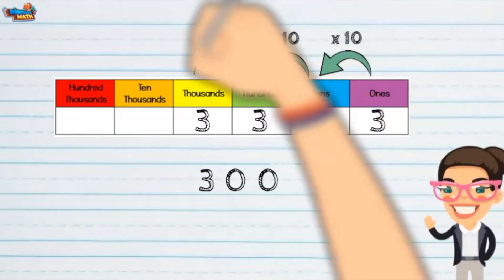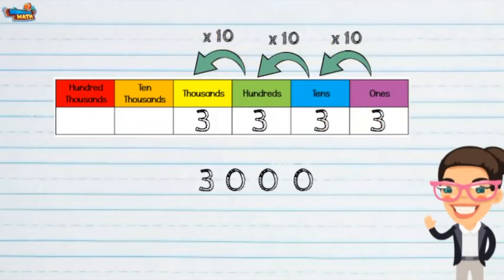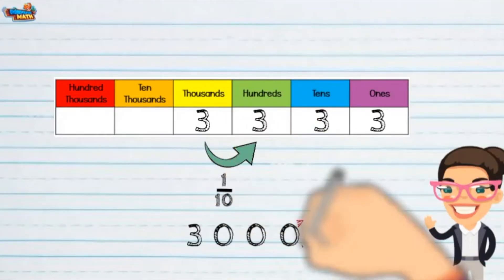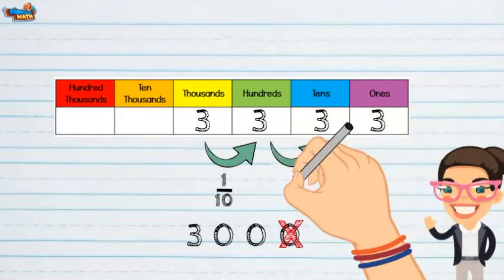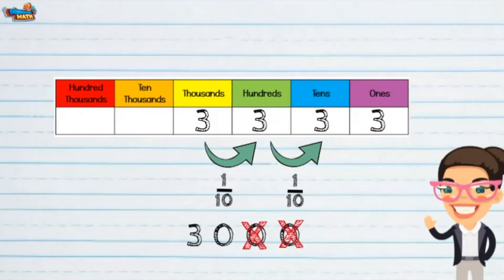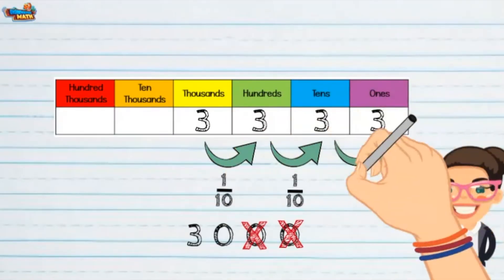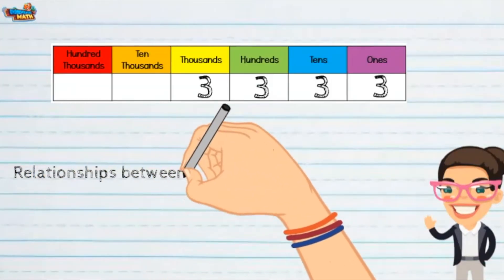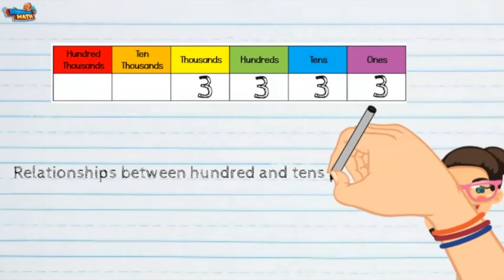As we move left to right, each place value is one tenth of the place value before it. When finding the relationship between the hundreds place and tens place in the number 3,333, start at the hundreds place.